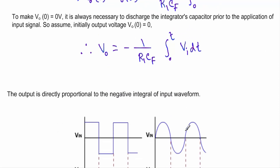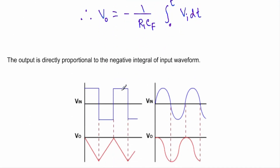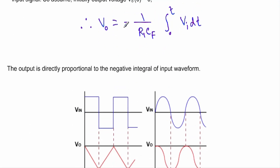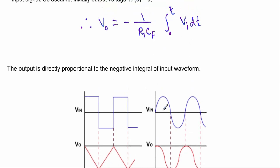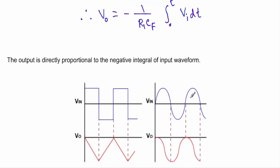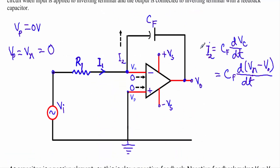If we apply a rectangular waveform, we will get a triangular waveform at the output. But since the output is the negative integral, we get a negative triangular waveform. If we apply a sinusoidal voltage, the output will be a cosine voltage, but negative — a negative cosine — due to this negative sign.